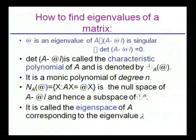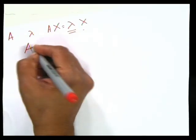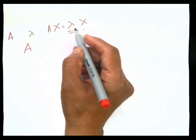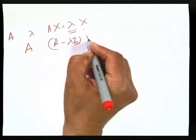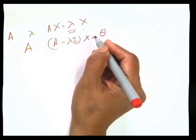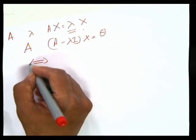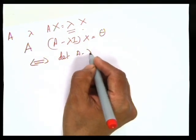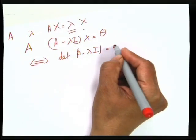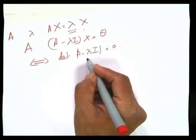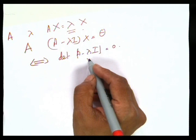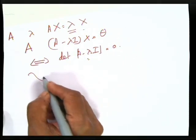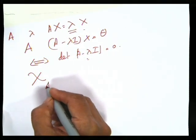How do you find the eigenvalues of a matrix? Starting with an n×n matrix A, lambda is an eigenvalue if and only if (A − lambda·I)x = 0 has a non-trivial solution. This is possible if and only if det(A − lambda·I) = 0. The expression det(A − lambda·I) is a monic polynomial of degree n in lambda, called the characteristic polynomial of A, denoted chi_A(lambda).